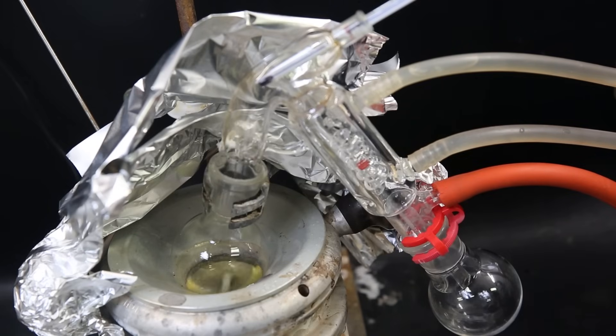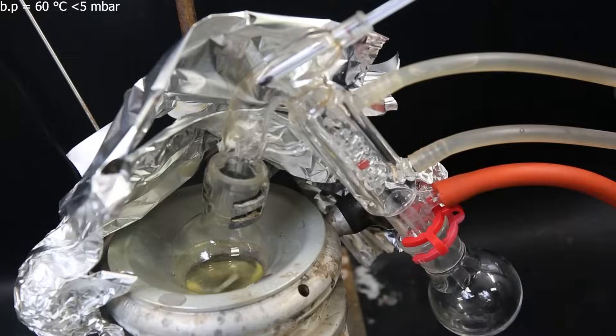I then remove the funnel and replace it with a short path distillation apparatus. I insulate it with a bit of aluminum foil and pull a strong vacuum to distill over all of the tetraethyl lead. It comes over cleanly as a clear liquid with a boiling point of 60°C at around 5 millibars of pressure.